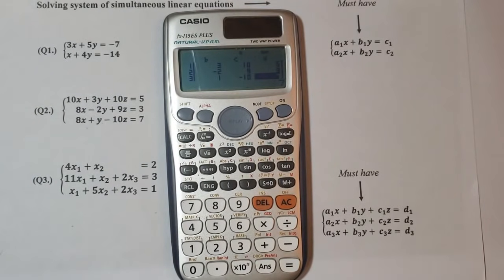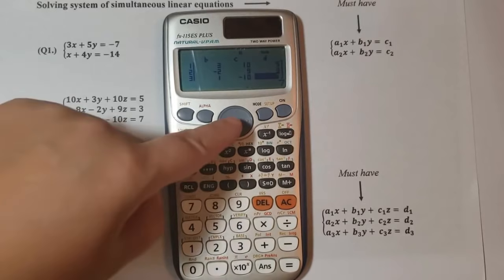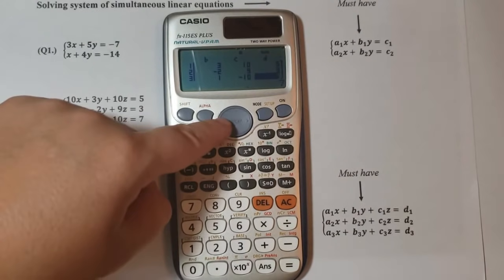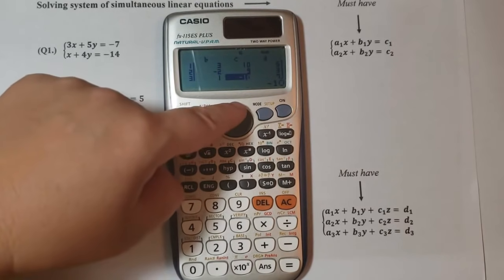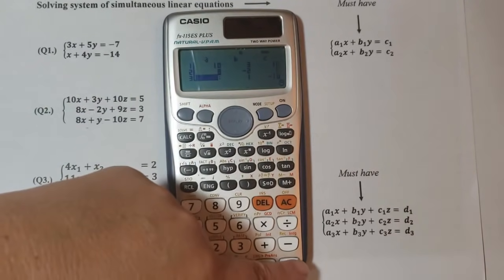Now when finished, before going to the solution you can use the arrows. You can use the arrows here and make sure you've entered the values correctly. Up and down value arrows and left and right. And then press equal for the solution.